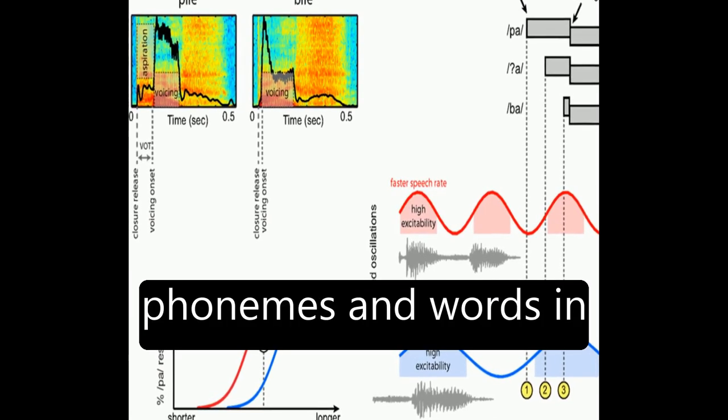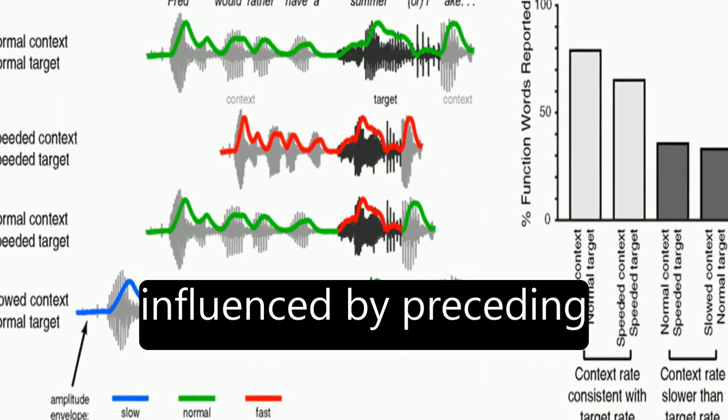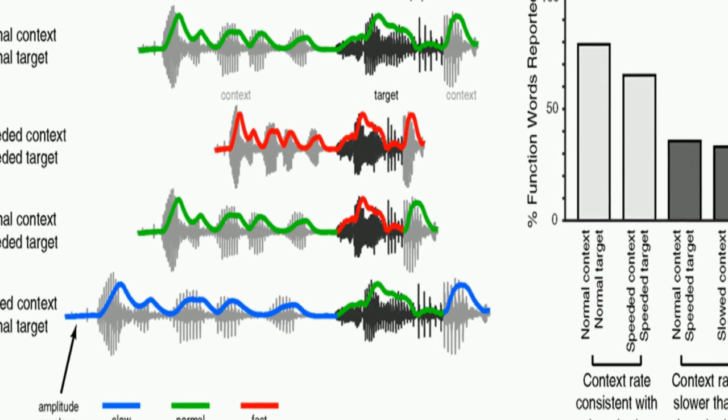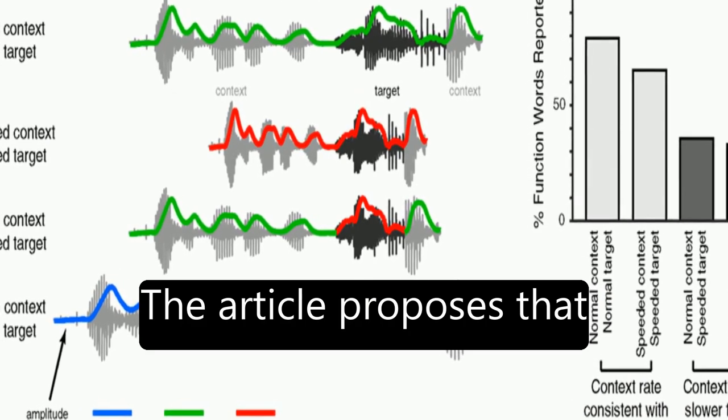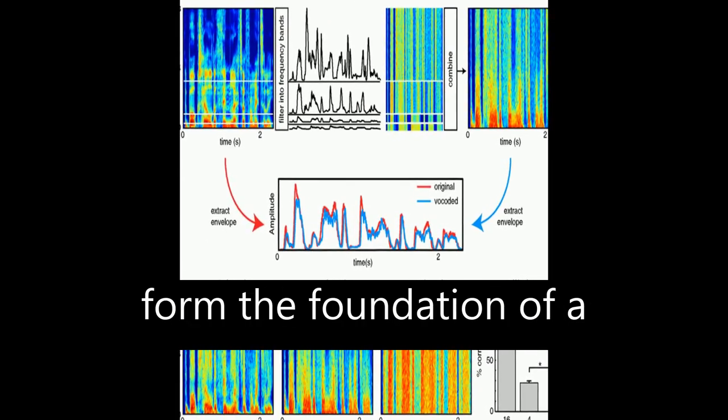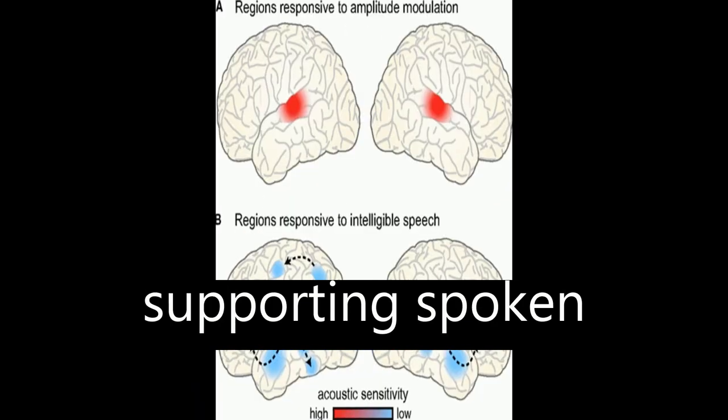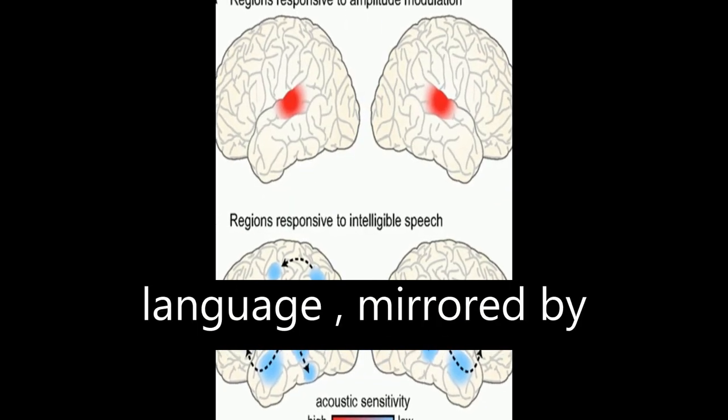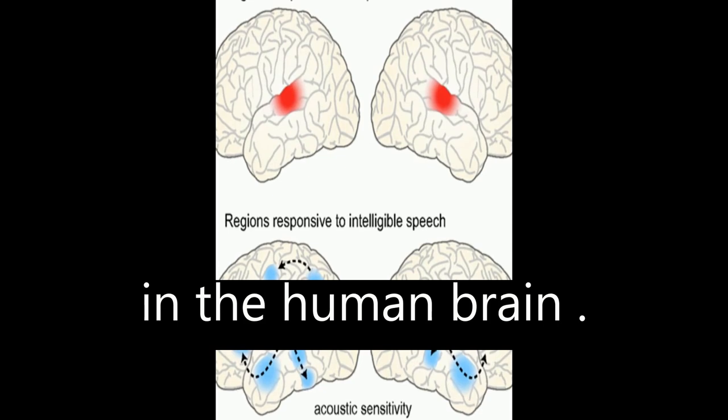The perception of phonemes and words in connected speech is influenced by preceding speech rate. The article proposes that low-frequency oscillations in the acoustic speech signal form the foundation of a rhythmic hierarchy supporting spoken language, mirrored by phase-locked oscillations in the human brain.